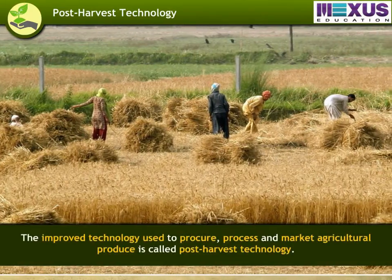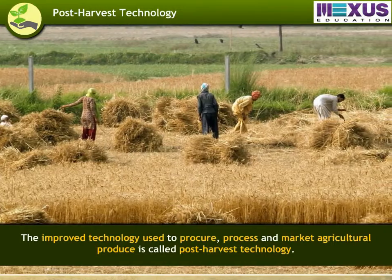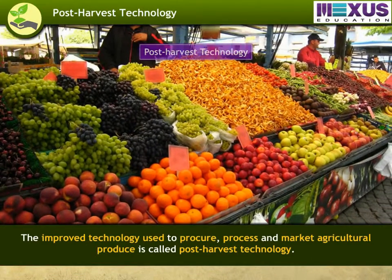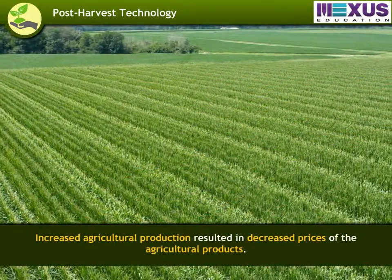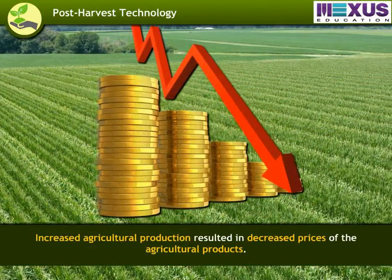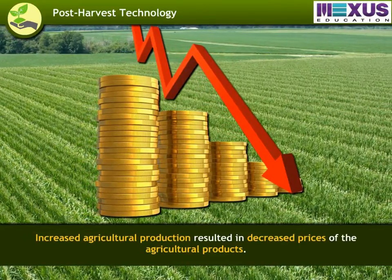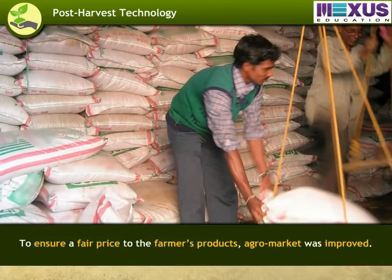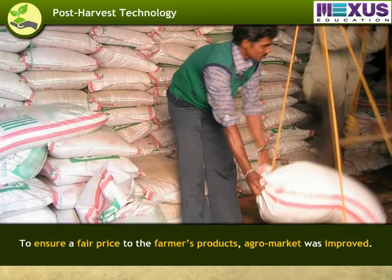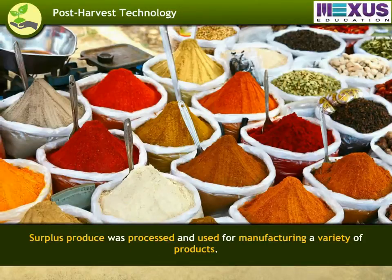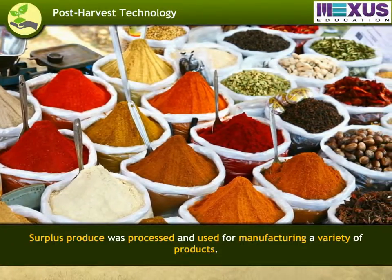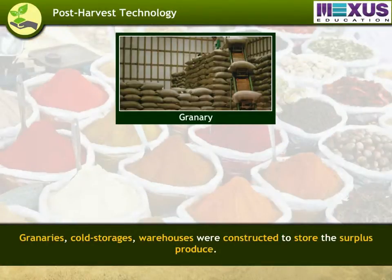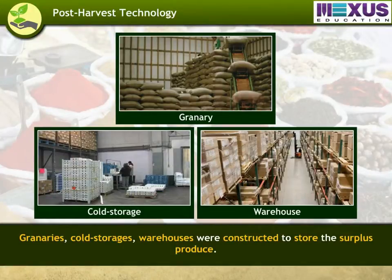The improved technology used to procure, process, and market agricultural produce is called post-harvest technology. Increased agricultural production resulted in decreased prices of agricultural products. To ensure a fair price for farmers' products, the agro-market was improved. Surplus produce was processed and used for manufacturing a variety of products. Granaries and cold storage warehouses were constructed to store the surplus produce.